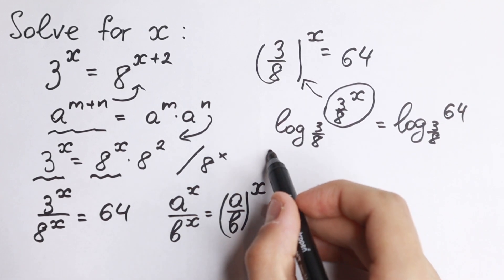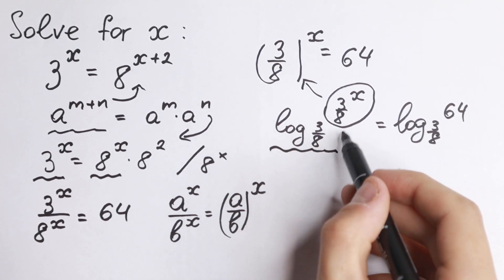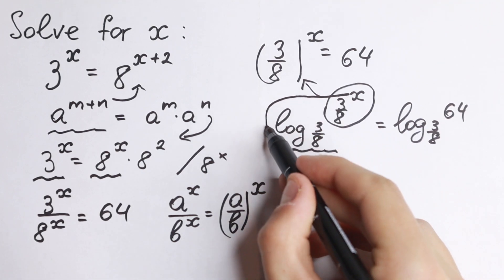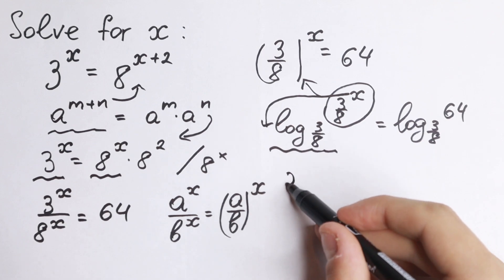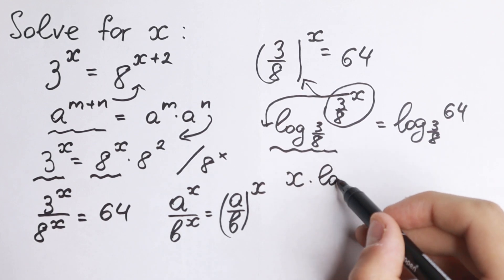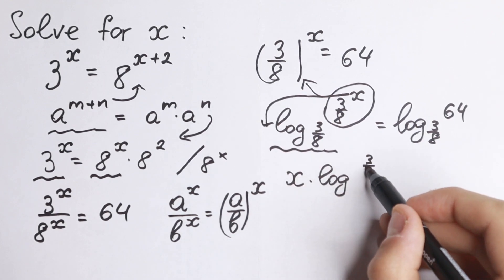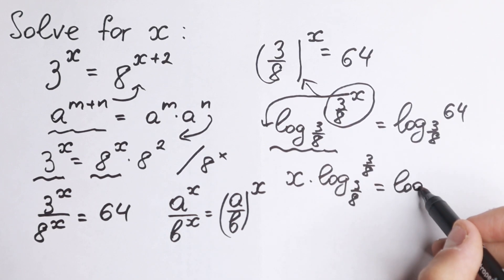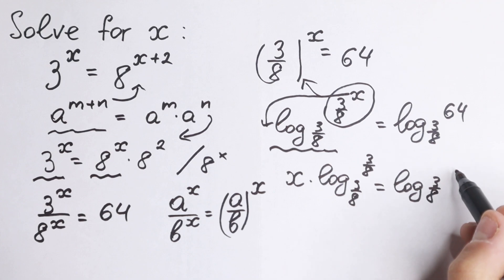But in this case, with this 3/8, we'll have 1 and x jumps right here. So I'll write it step-by-step: x times log base 3/8 of 3/8 equals log base 3/8 of 64.